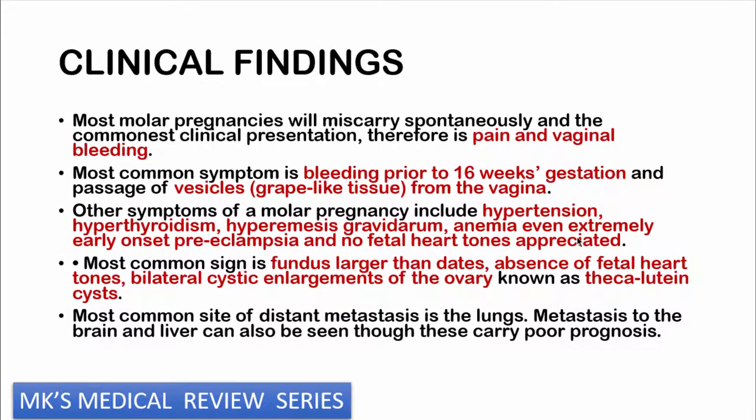Most molar pregnancies will miscarry spontaneously, presenting with pain and vaginal bleeding. The most common symptom is bleeding prior to 16 weeks of gestation, with passage of vesicles or grape-like tissue from the vagina. Other symptoms are associated with increased beta-HCG: hypertension with early-onset preeclampsia, hyperthyroidism, hyperemesis gravidarum, and severe anemia. Fetal heart tones will not be appreciated. Common signs include fundal height larger than dates, absent fetal heart, bilateral cystic enlargement of the ovaries — theca luteal cysts — and possible sites of distant metastasis such as the lungs. Metastasis to the brain and liver carries a poor prognosis.